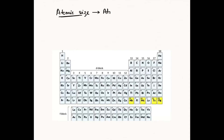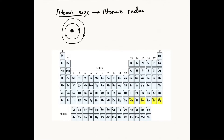When we talk about atomic size, we refer to the atomic radius. If I have my nucleus and the orbitals — suppose I have a two-orbital atom — the distance between the center of the nucleus to the outermost electron is known as the atomic radius, and that is what determines the atomic size.